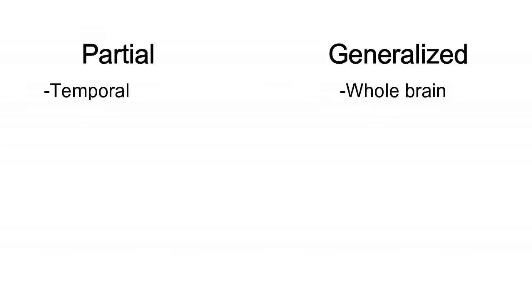Seizures can be partial or generalized. The origin of the seizure can be partial, meaning that only a group of neurons is responsible — very likely in the temporal area — or generalized, meaning the entire brain just started firing all over at once.